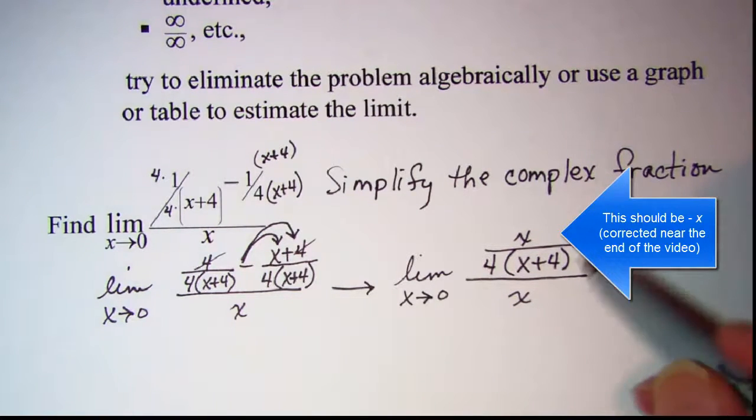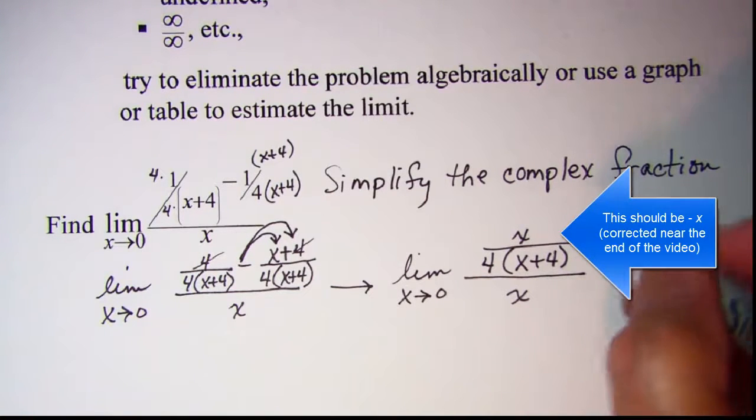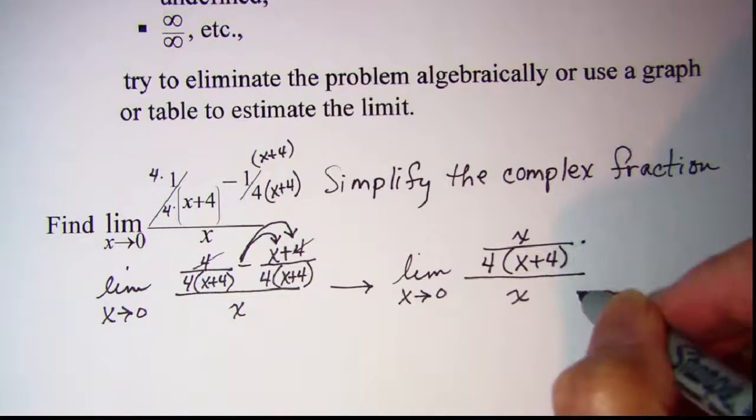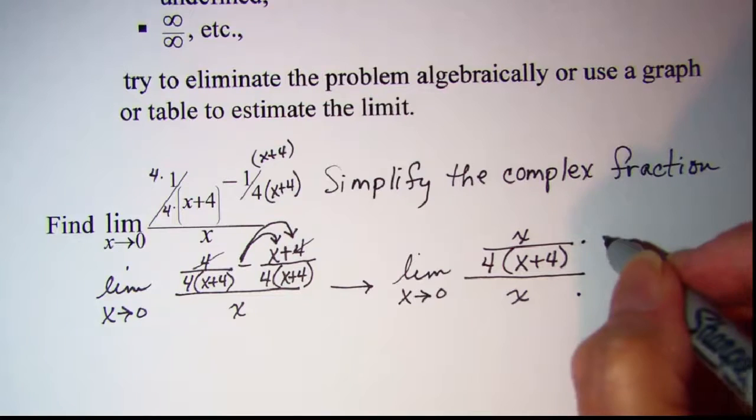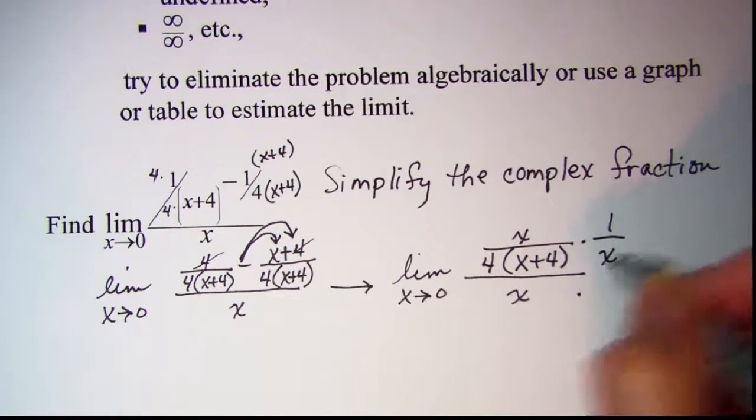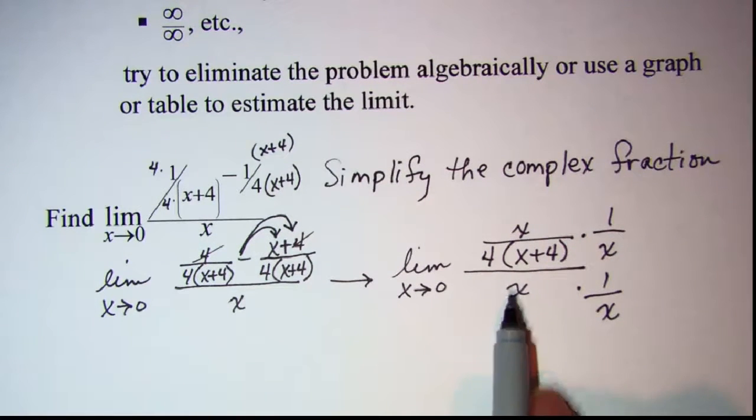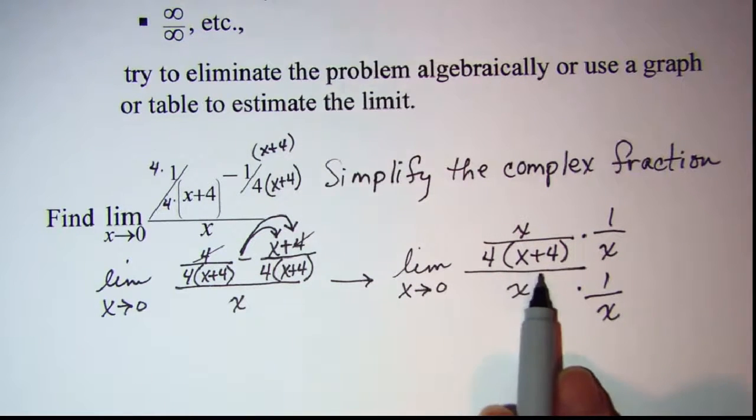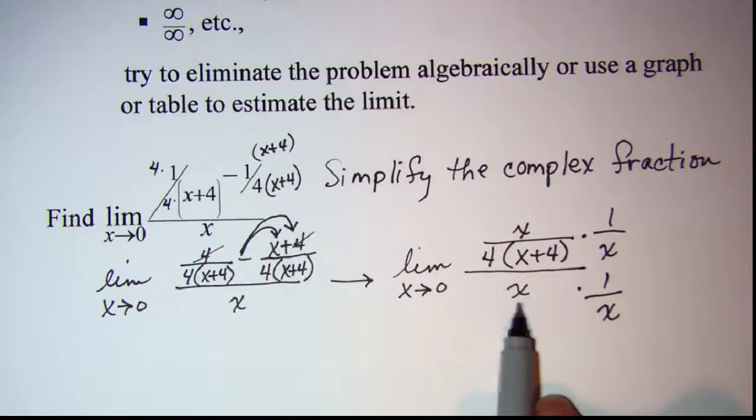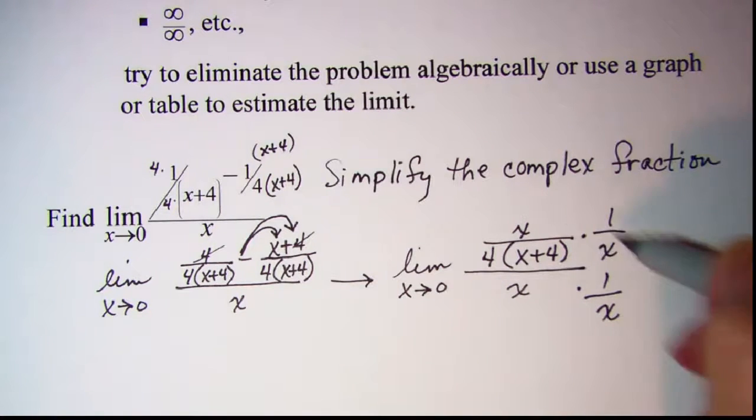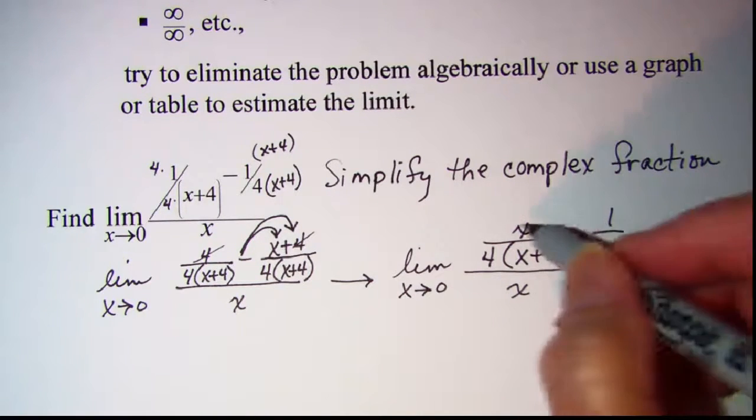Now I still have a complex fraction, but what I'm going to do is multiply the top and bottom of this complex fraction by 1 over x. Or you can also use the definition of division, in that dividing by x is the same as multiplying by the reciprocal. By doing this, these cancel.